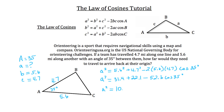If that's not the answer you got, go back and check your work, and also check that the mode of your calculator is set to degrees, because we're working with degrees in this problem. So now you have a squared equal to 10.4. We want to solve for a, so take the square root of both sides — the square root and the square cancel on the left, and a is equal to approximately 3.2. So this orienteering group is going to have to travel roughly 3.2 miles back to their origin.